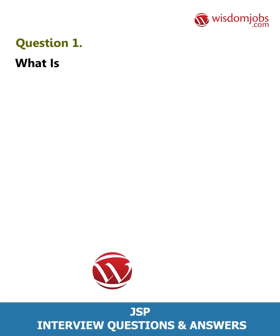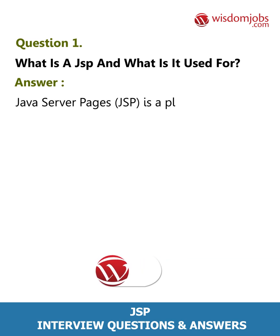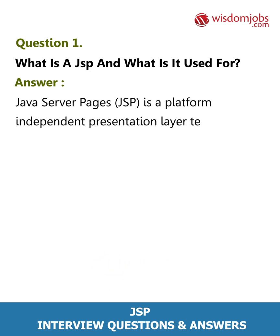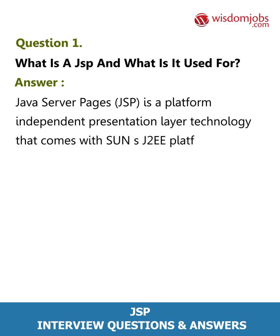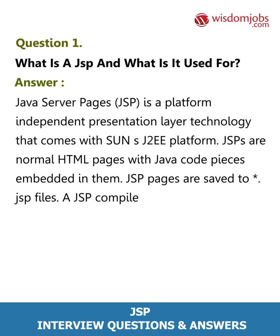Question 1: What is a JSP and what is it used for? Answer: Java Server Pages (JSP) is a platform-independent presentation layer technology that comes with Sun's J2EE platform. JSPs are normal HTML pages with Java code pieces embedded in them. JSP pages are saved to .jsp files, and a JSP compiler is used in the background to generate a servlet from the JSP page.